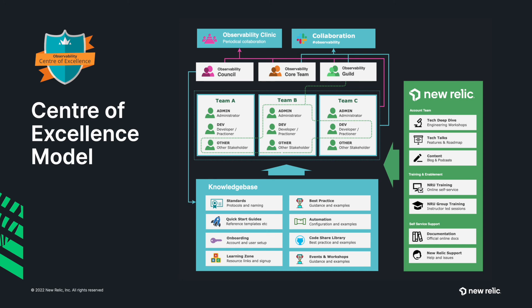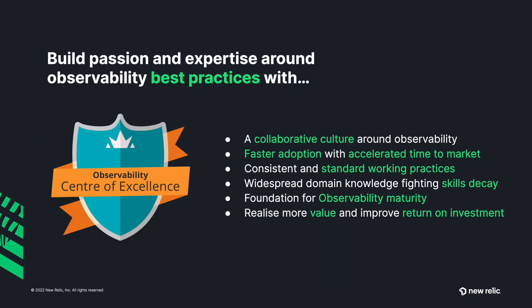So that's the model in a nutshell — practitioners collaborating together using resources from the knowledge base, assisted by New Relic. If you want to build passion and expertise around observability and best practices, then a center of excellence is what you need. It's going to help you build a collaborative culture around observability, accelerate time to market with faster adoption, provide consistent and standard working practices across your organization, and improve widespread domain knowledge while fighting skills decay. The center of excellence provides a great foundation for maturing your observability, allowing you to realize more value and improve your return on investment.